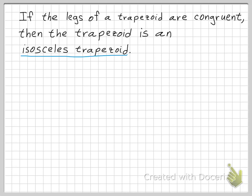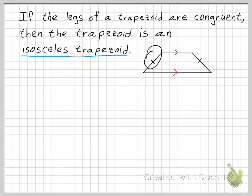Moving right along with definitions: if the legs of a trapezoid are congruent, then the trapezoid is said to be an isosceles trapezoid. So if the legs are congruent to each other, it's an isosceles trapezoid.